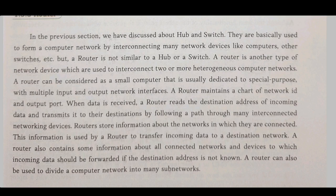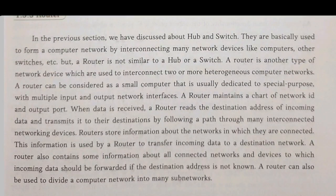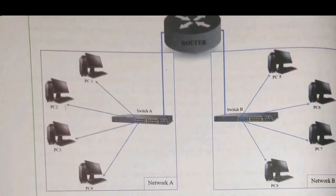A router is a type of networking device used to interconnect two or more heterogeneous computer networks. While hub and switch are used to connect computers within the same internal network, a router is used to connect two or more networks together. A router sends information from one computer to a network, reads the destination address, and sends it to the destination computer. A router can also divide a network into sub-networks. For example, Network A connected by Switch A and Network B connected by Switch B, both connected to a router, can easily communicate with each other.